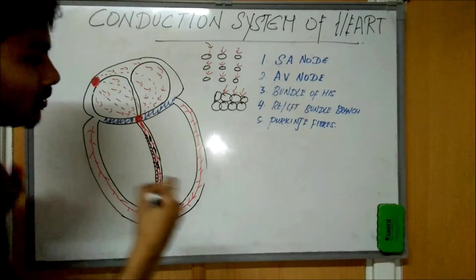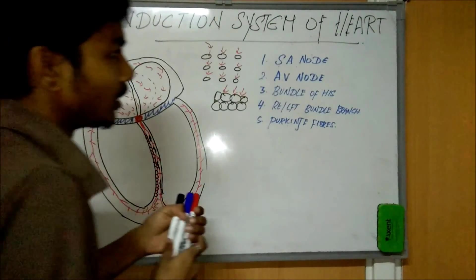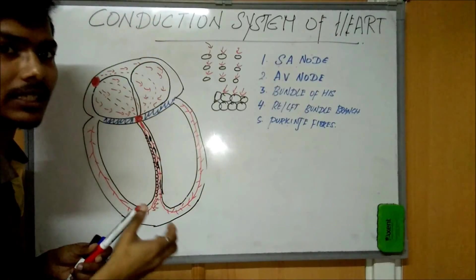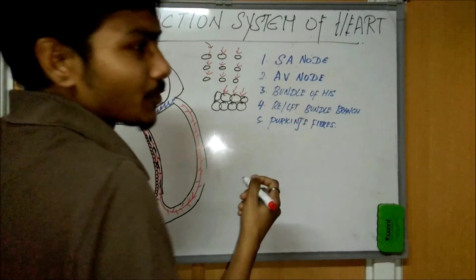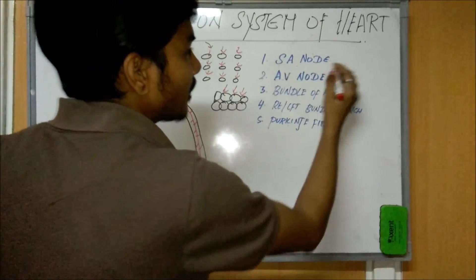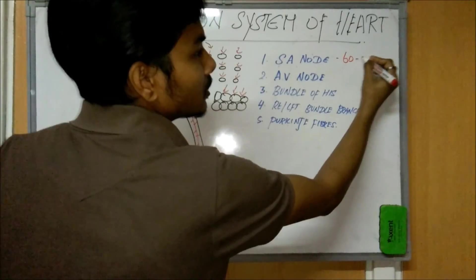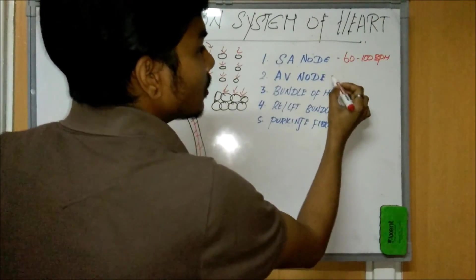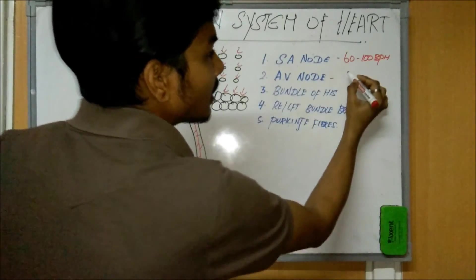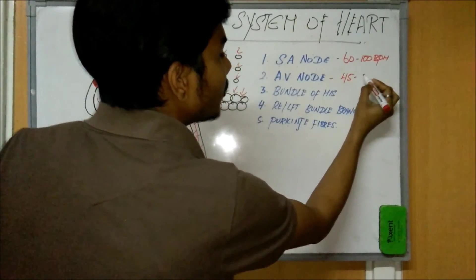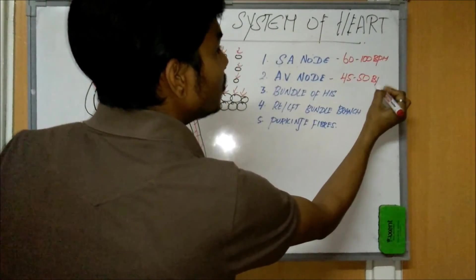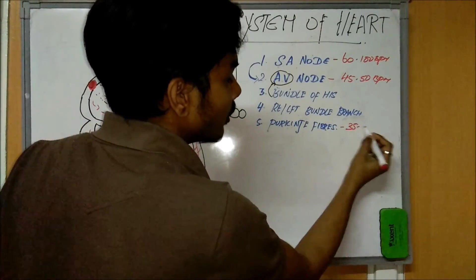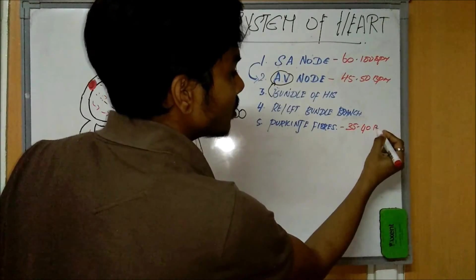Regarding rhythmic rates — beats per minute: the SA node generates 60 to 100 beats per minute, the AV node generates about 45 to 50 beats per minute, and the Purkinje fibers generate about 35 to 40 beats per minute.